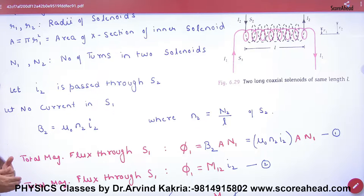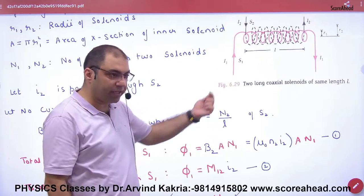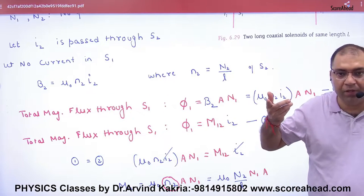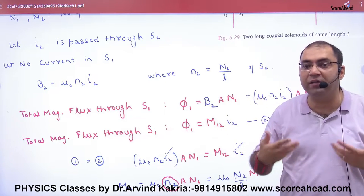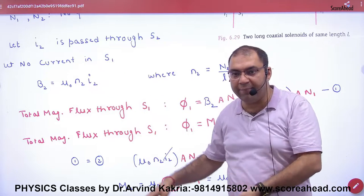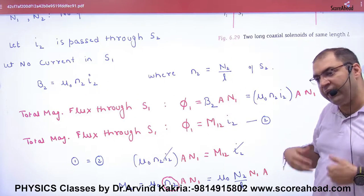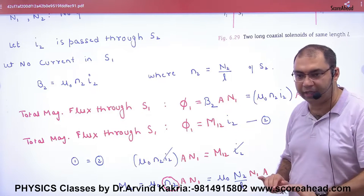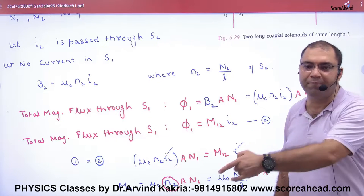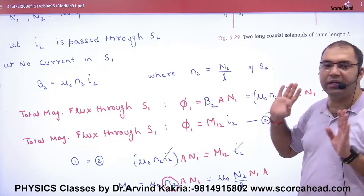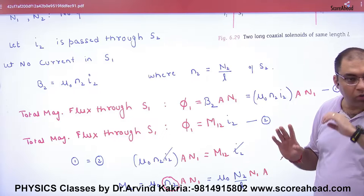We will change the flux of the secondary. The secondary S1 coil, its flux will be B into area. It has its own B, but since current wasn't passed through it, it will use the primary coil's B. So B primary is used, area is its own, number of turns are its own. Only one thing from the other: B. The primary coil's B, secondary coil's flux.